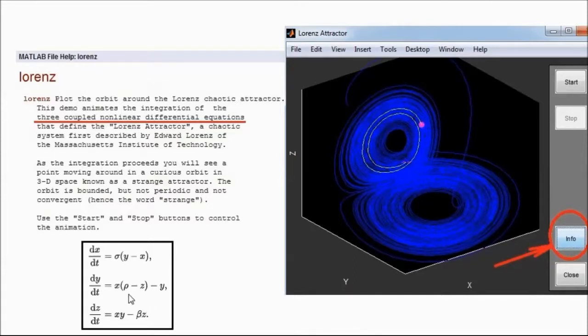And there are three parameters which need to be specified for beginning the integration. And the parameters are sigma, rho, and beta. These must be specified, and the initial condition must also be given for integrating these coupled nonlinear differential equations.